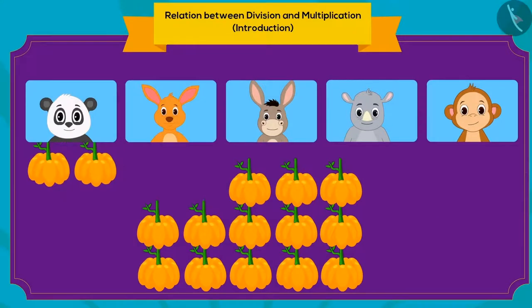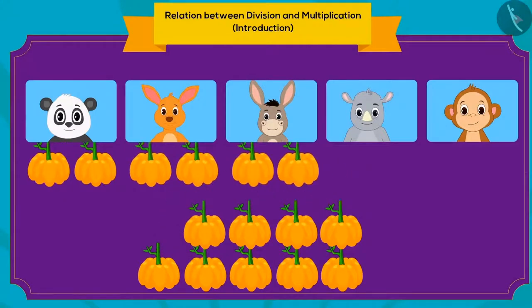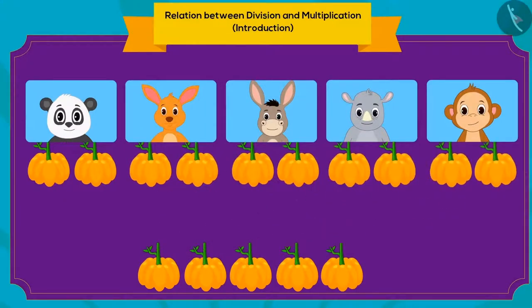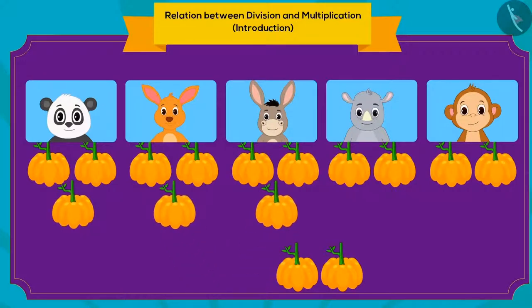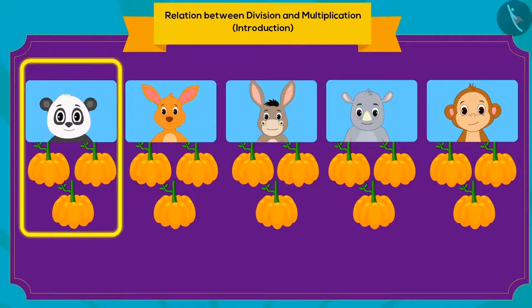Chanda first gave two pumpkins each to her five friends. Then she gave one more pumpkin. How many pumpkins will Chanda give to each friend? Three pumpkins.